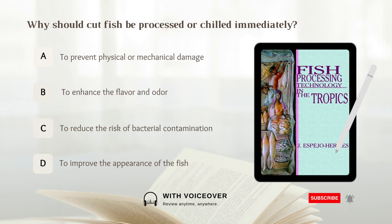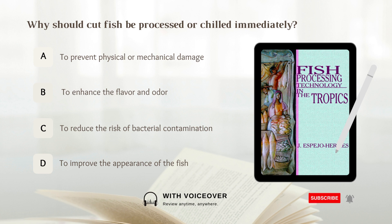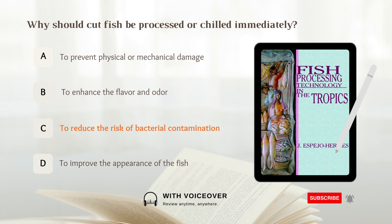Why should caught fish be processed or chilled immediately? A. To prevent physical or mechanical damage. B. To enhance the flavor and odor. C. To reduce the risk of bacterial contamination. D. To improve the appearance of the fish. Answer: C. To reduce the risk of bacterial contamination.